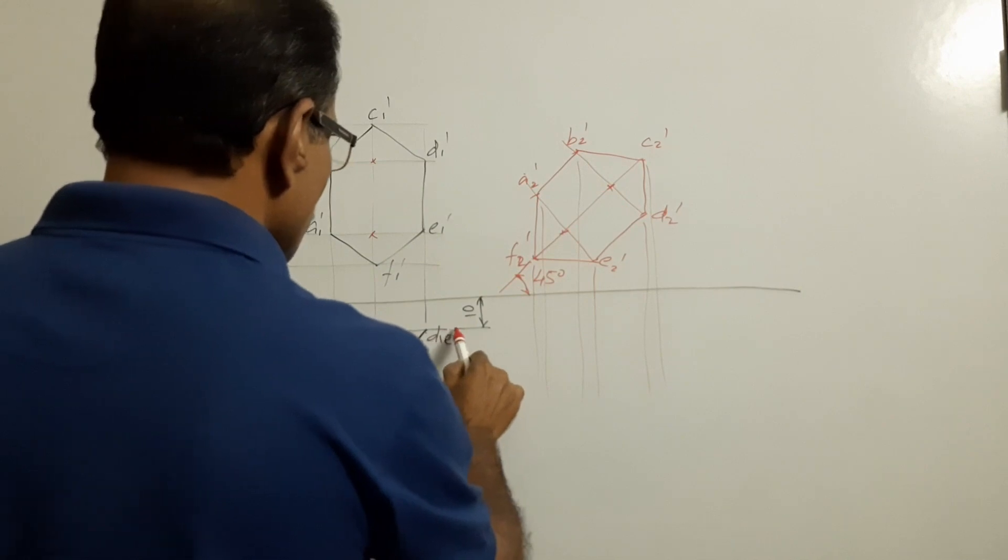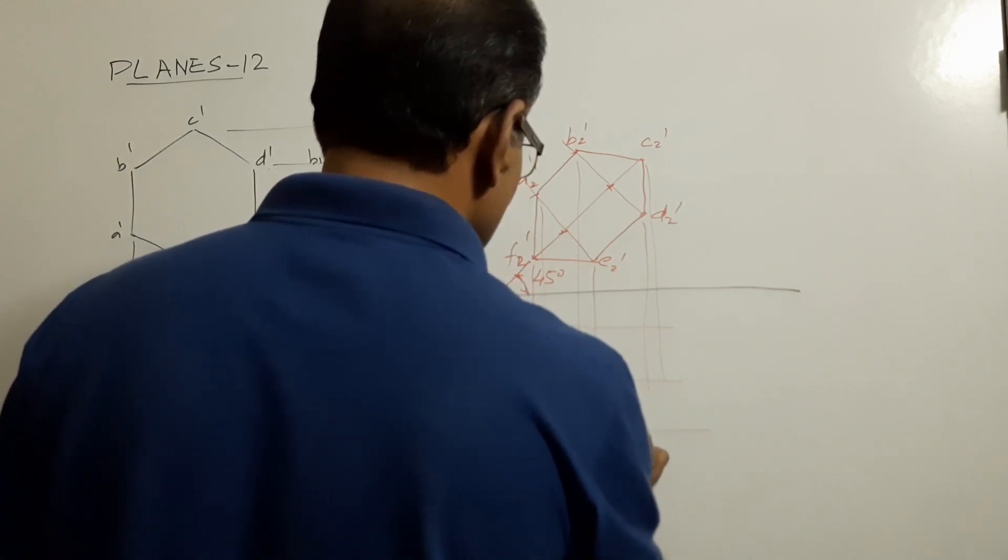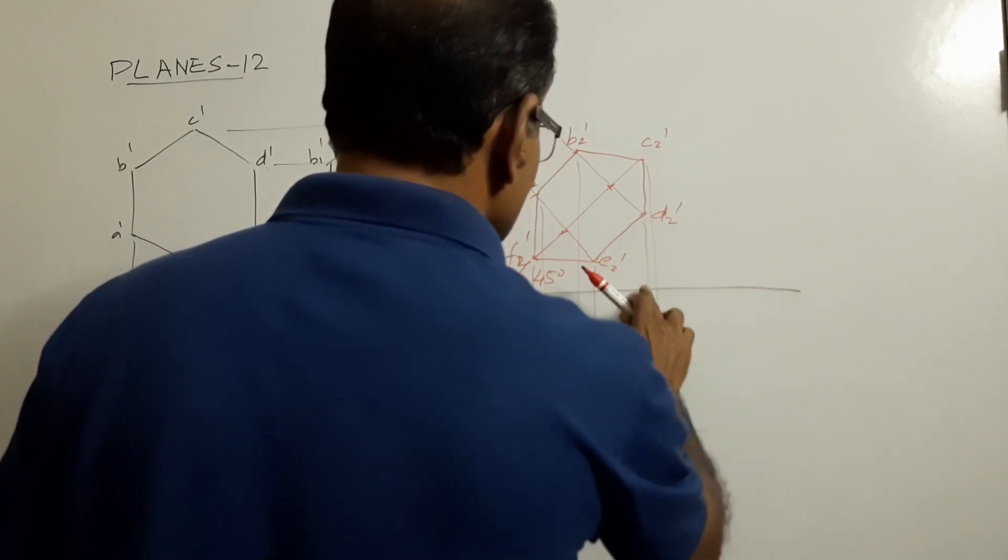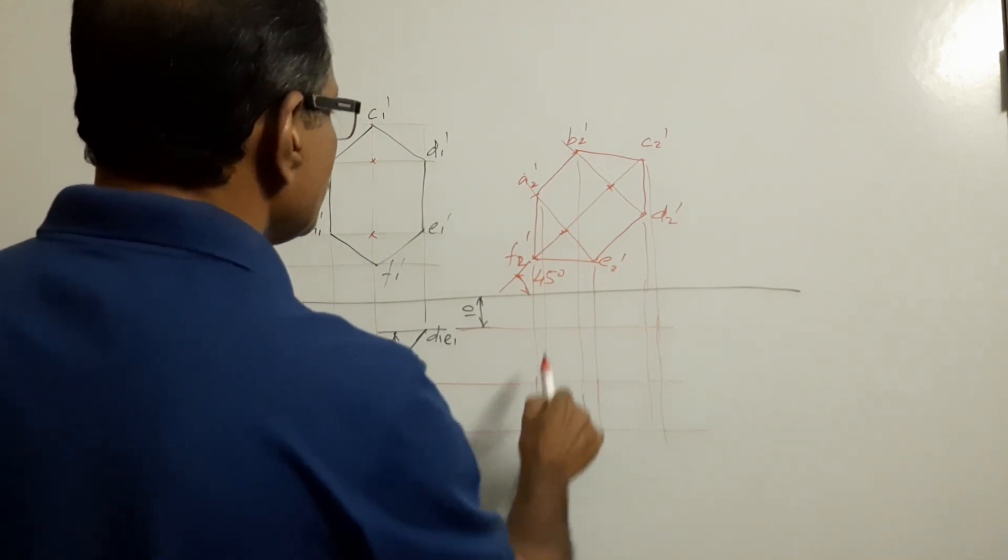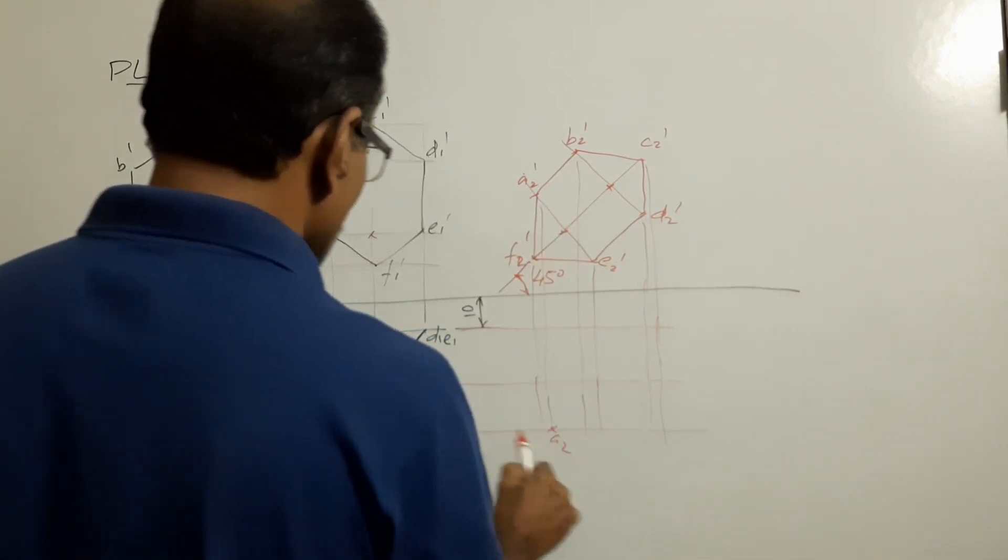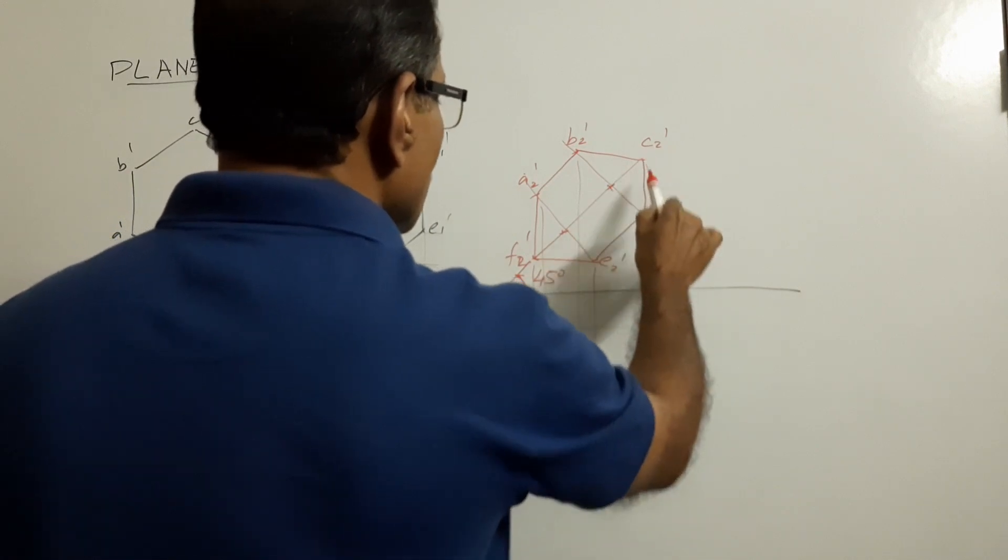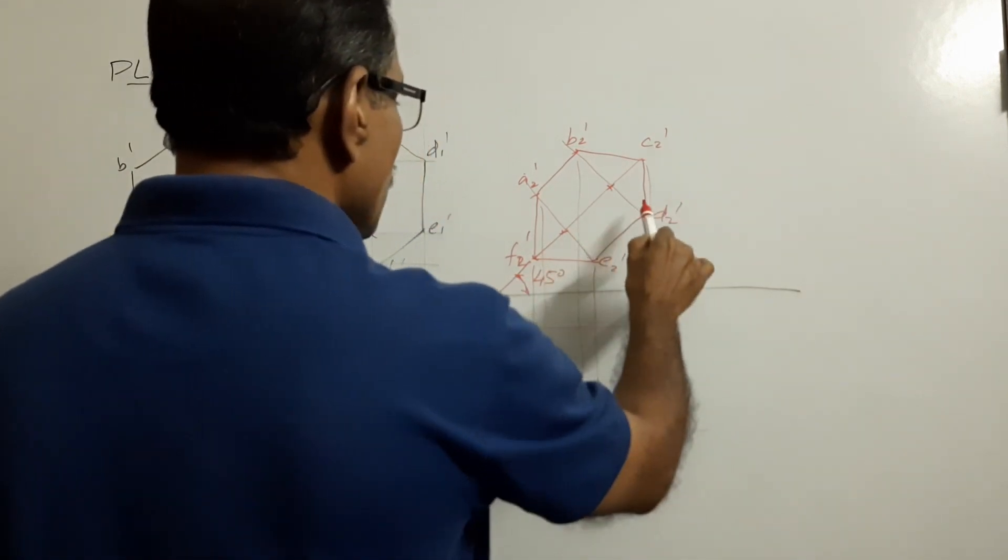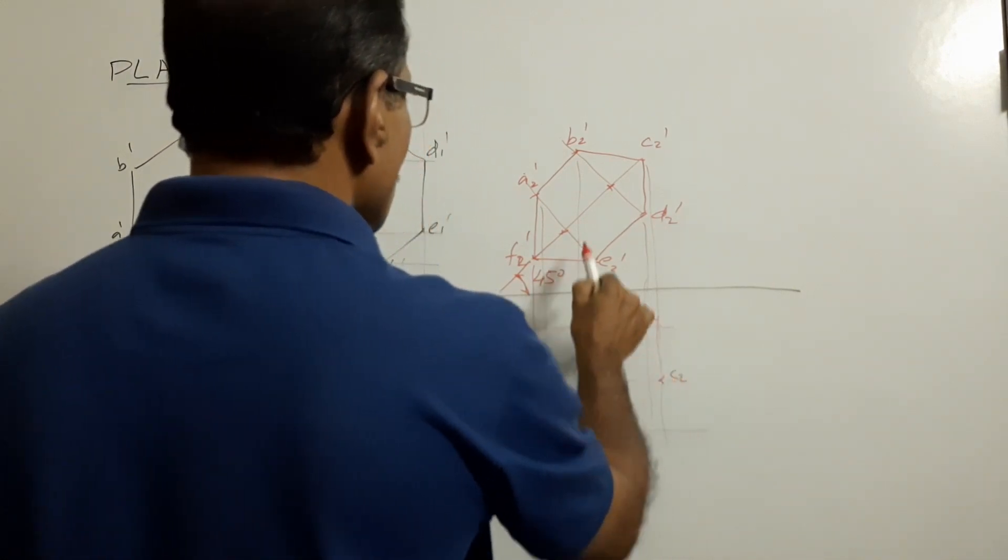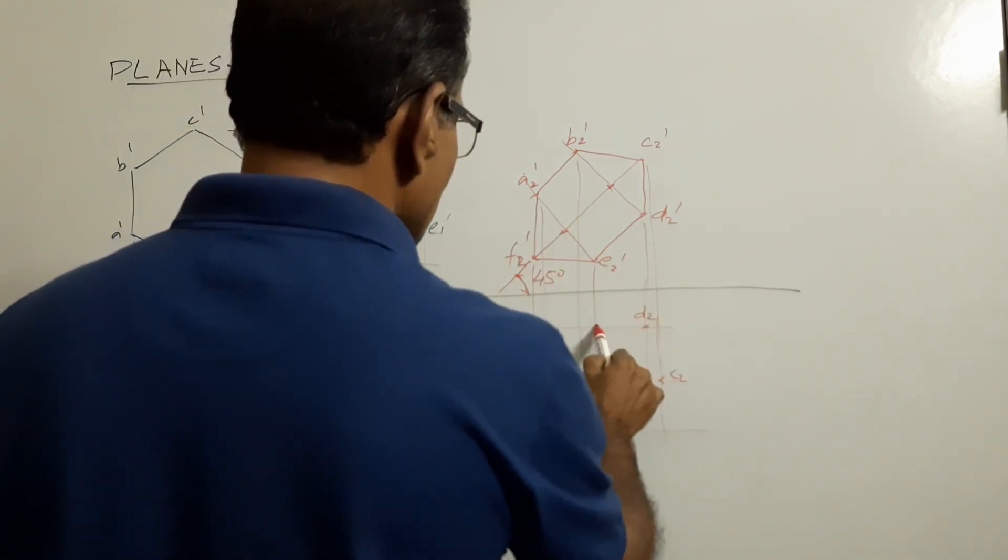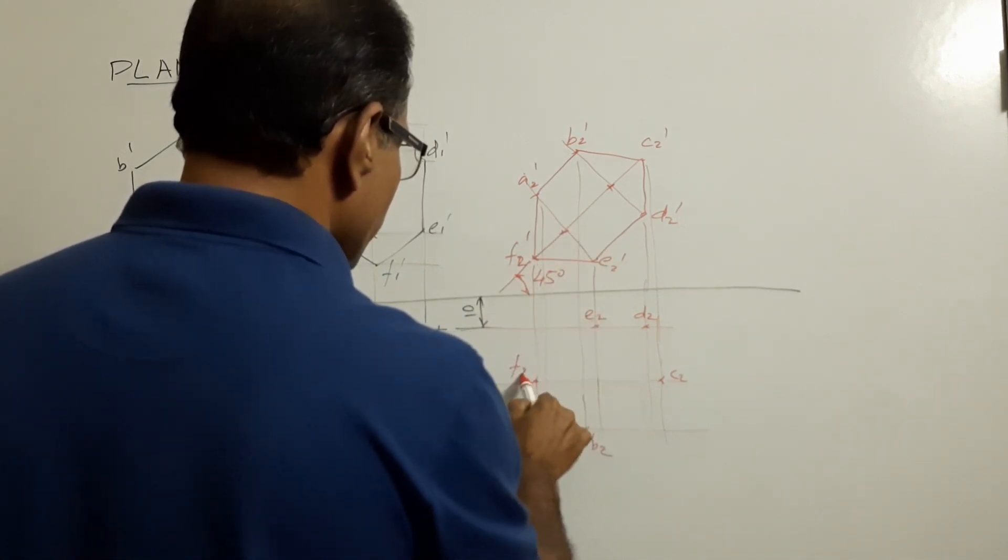Draw horizontal projectors. D, D2, E, E2, and F, F2. Connect them.